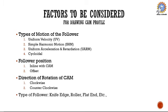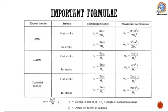If a problem asks for maximum velocity and maximum acceleration, the following formulas are used. For simple harmonic motion, maximum velocity V_max = π·ω·S / (2·θ_a). Likewise, you can check the formula for acceleration. For uniform acceleration and retardation motion, as well as uniform velocity, the same formula is applied. For cycloidal motion, a different formula is used.